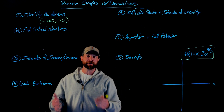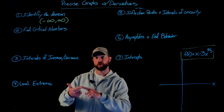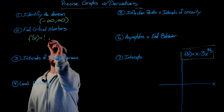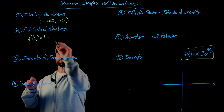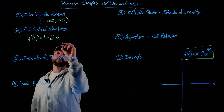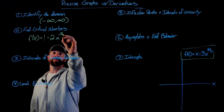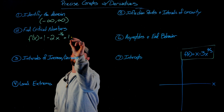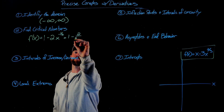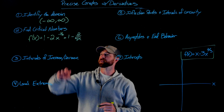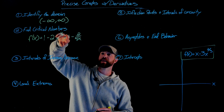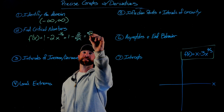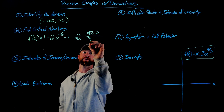Next, we're going to find the critical numbers by finding the first derivative and then finding where it's zero or undefined. When I differentiate this function, I get a 1 in the first term. Then I bring down the two-thirds and multiply it by 3, which gives me a 2, and x to the two-thirds minus 1 is x to the negative one-third. Cleaning things up, this becomes 1 minus 2 over the cube root of x. I then multiply numerator and denominator by the cube root of x to combine them, giving me the cube root of x minus 2, all over the cube root of x.